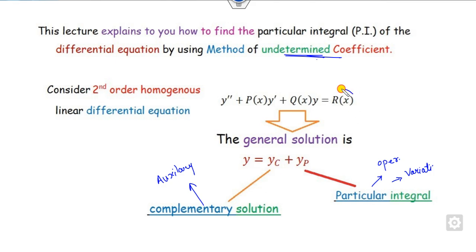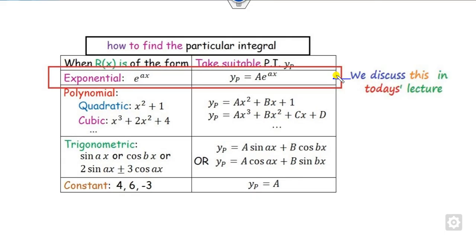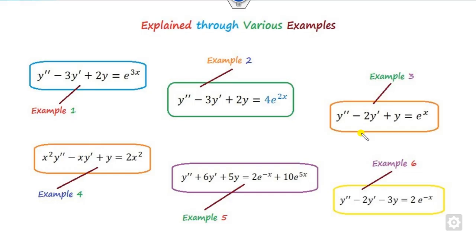The method of undetermined coefficients depends upon the nature of r(x) — whether it is exponential, polynomial, trigonometric, or constant. According to the nature, we take the appropriate form for the particular integral. If it is exponential we take exponential form, if polynomial then polynomial, and so on. In this video we discuss only the first part — exponential — and will cover the rest in the next video. We will explain six examples; the right-hand sides are all exponential forms.